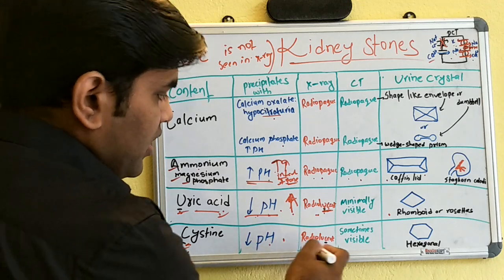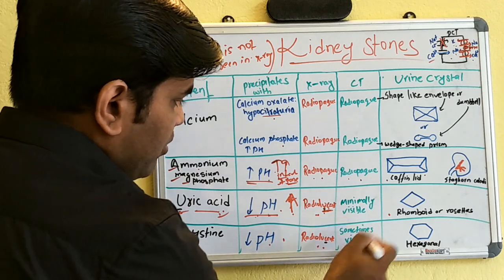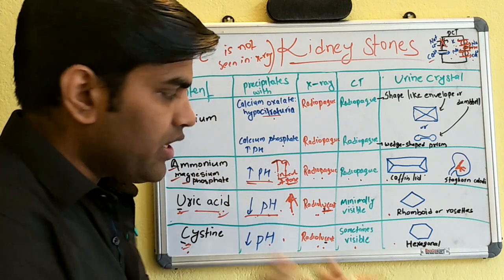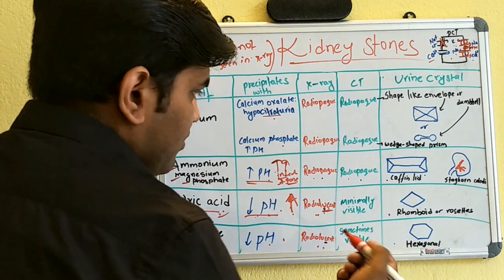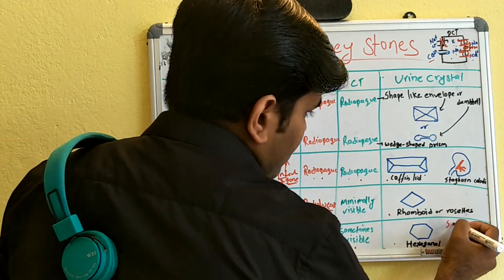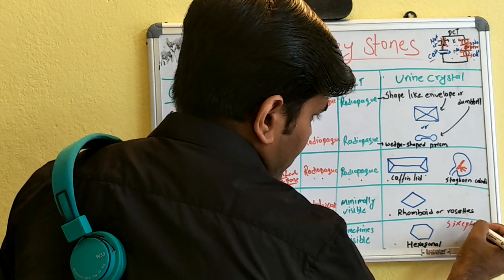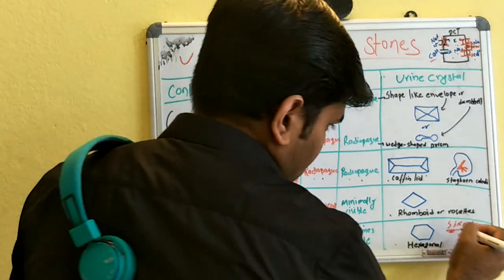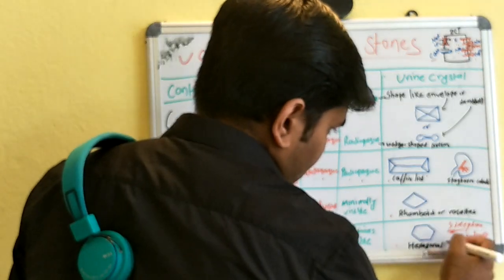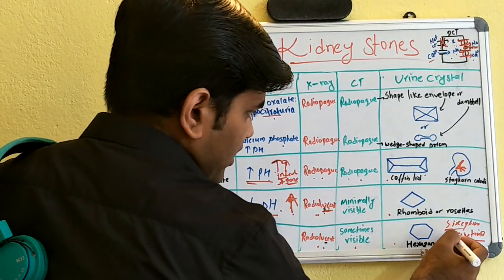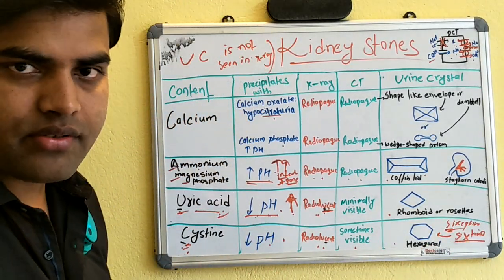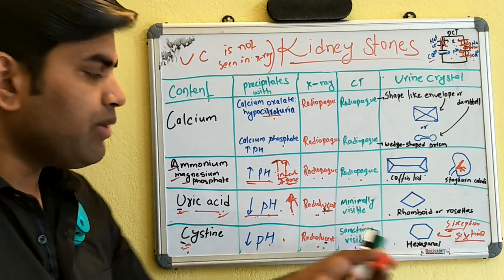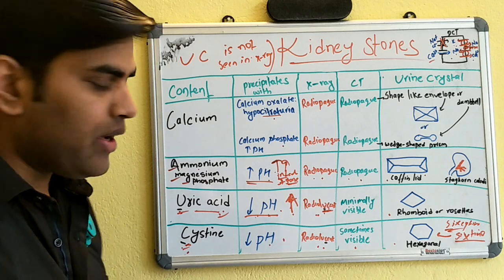Cystine stones also occur in decreased urinary pH. They are radiolucent on X-ray but can be visible on CT scan. The urine crystals are hexagonal in shape. A mnemonic: 'cystine' has 6 letters — and cystine crystals have 6 sides (hexagonal).